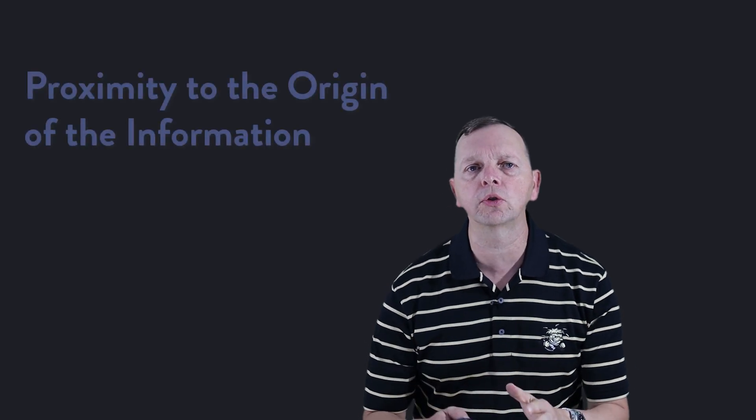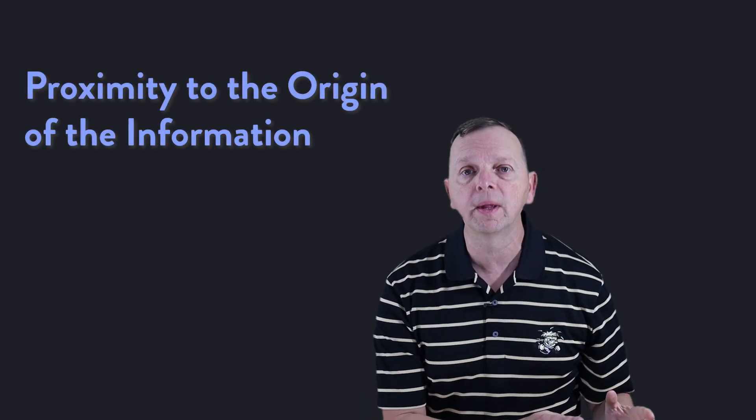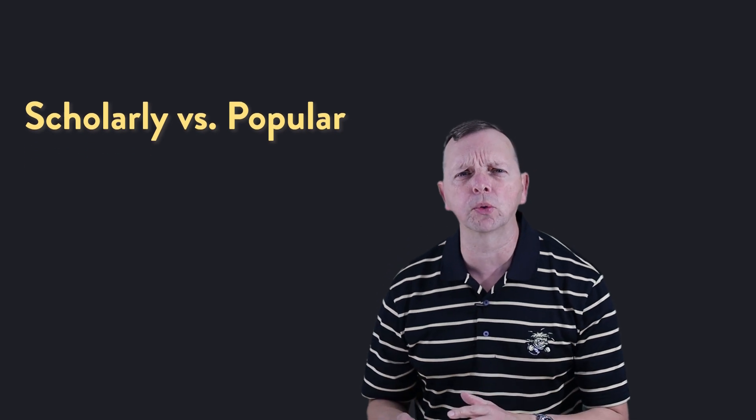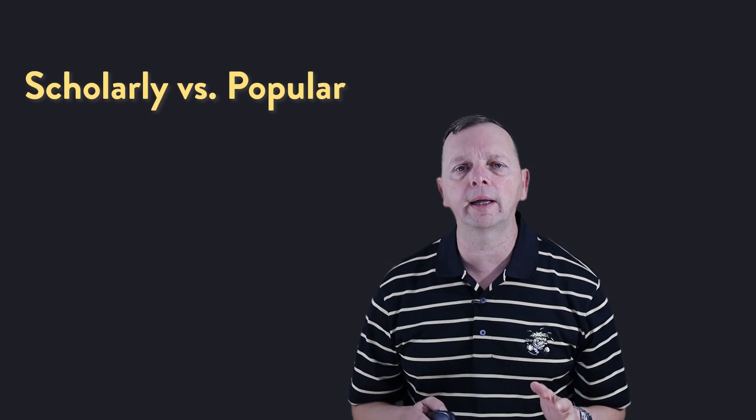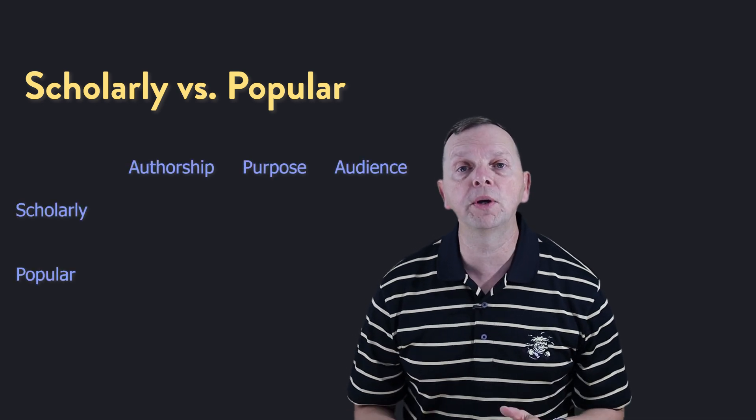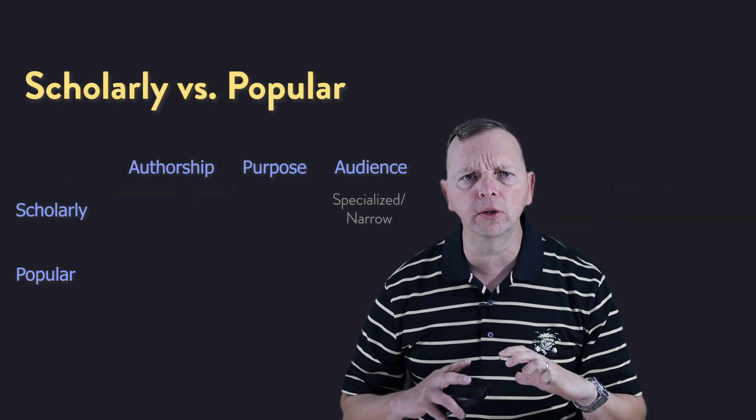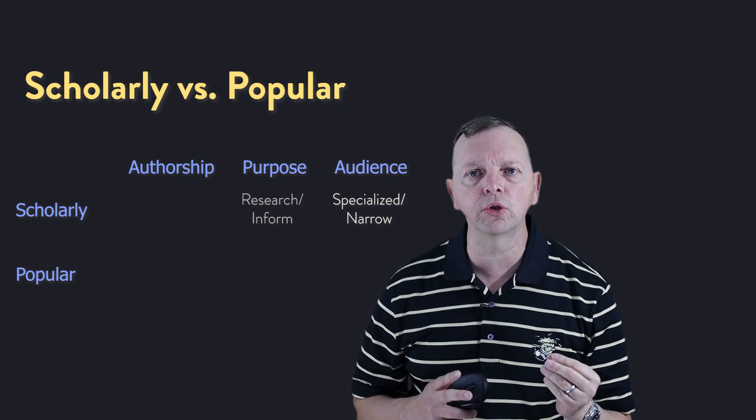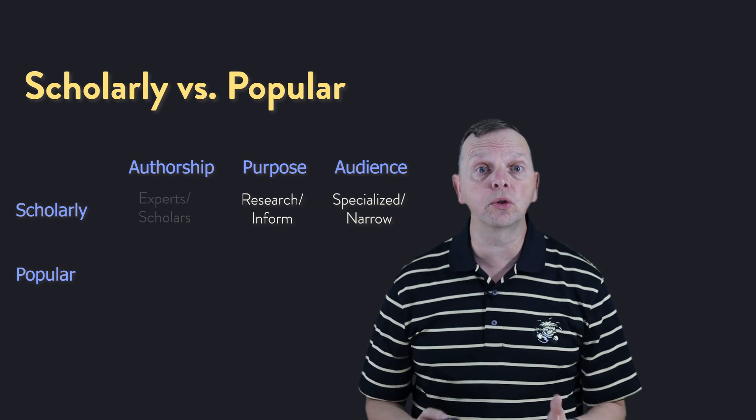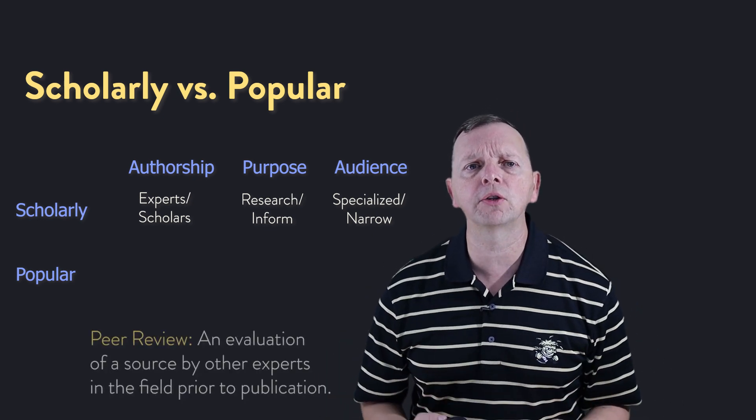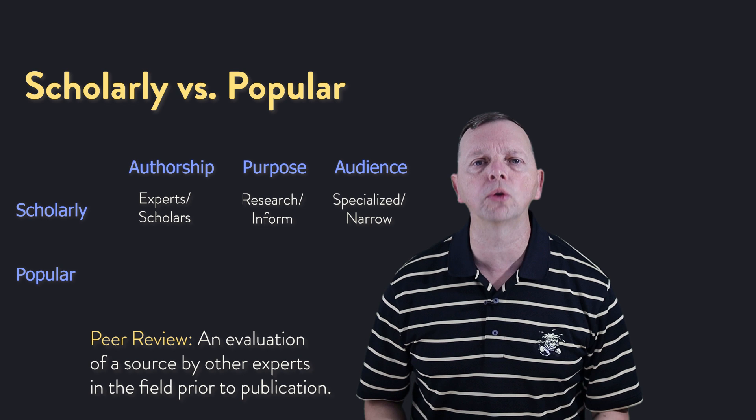But not all sources are created the same. So let's look at the sources in two major ways. First of all, is to see how close the sources are to the origin of the information or the event. And then we're going to look at scholarly sources and popular sources. Let's talk about those scholarly versus popular sources first. The biggest difference between these primarily lies with the differences in the authorship, the purpose, and its intended audience. Scholarly sources are written for a smaller specialized audience who are interested in the dense original research that these publications are meant to convey. The authors of these sources are considered experts or scholars in the field. And usually, these publications have gone through an evaluation process of other experts in the field, which is called a peer review.